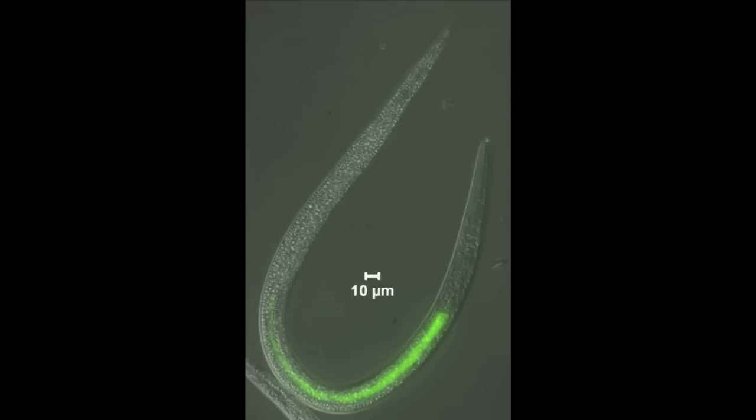Our bacteria is labeled with green fluorescent protein and is green in this picture. As you can see, it's in the intestine and not in the pharynx.